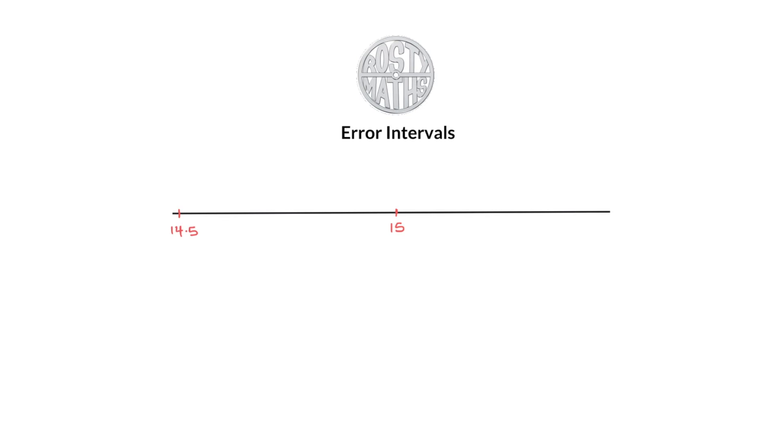I've got the number 15 here and it's been rounded to the nearest whole number. Because it's been rounded to the nearest whole number, I want to know what the lower bound and the upper bound would be. I'm going to call this my lower bound and up here my upper bound.